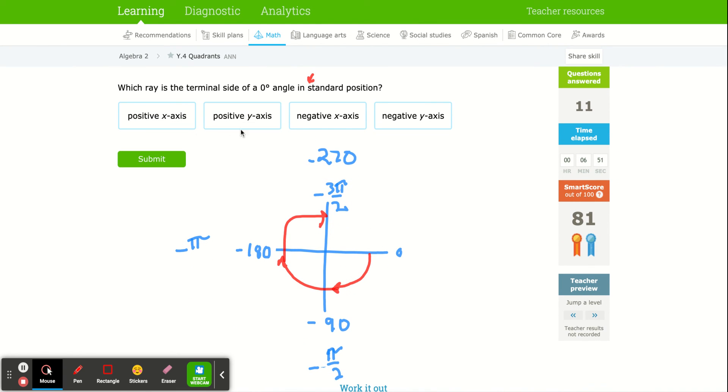A zero degree angle. Which ray is the terminal side of a zero degree angle in standard position? Well, that's the positive x-axis. That's zero, this axis coming out this way, the positive x-axis.